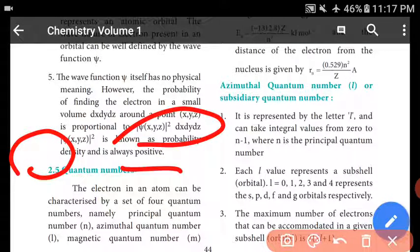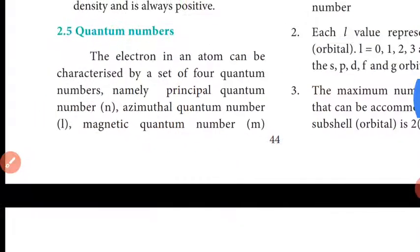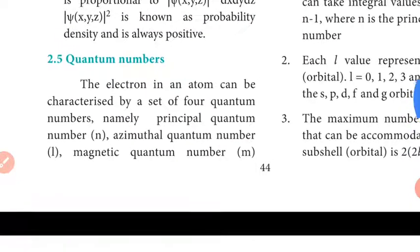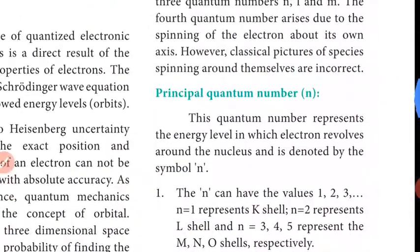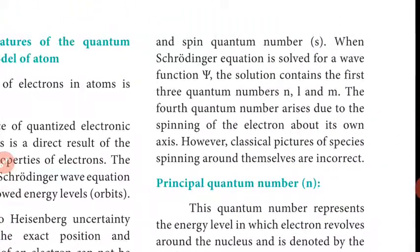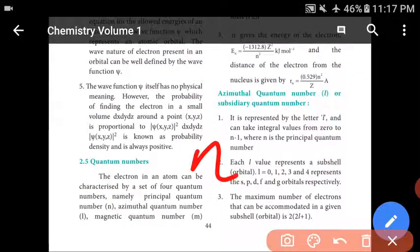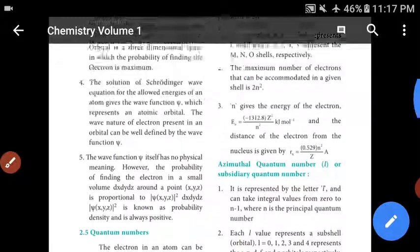Now we have to go to quantum numbers. In English, 9th standard second term. Now we have 4 types: principle quantum number, azimuthal quantum number, magnetic quantum number, and spin quantum number. They are denoted as N, L, M, and S respectively.